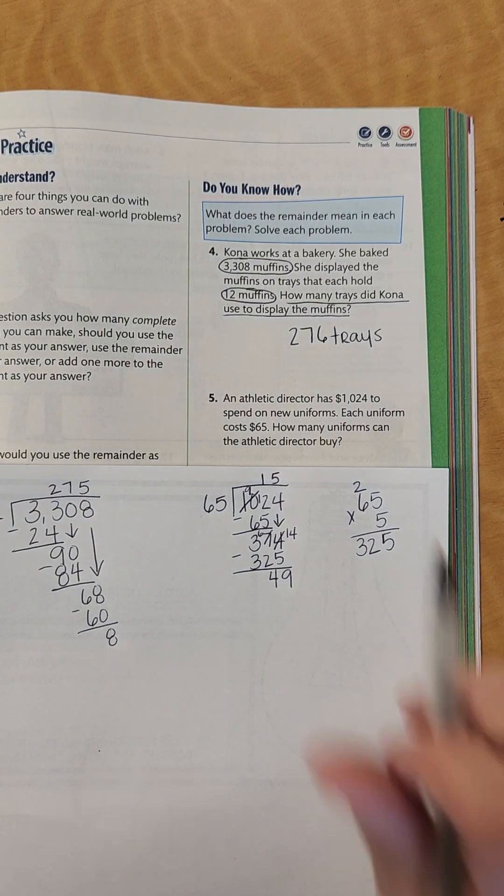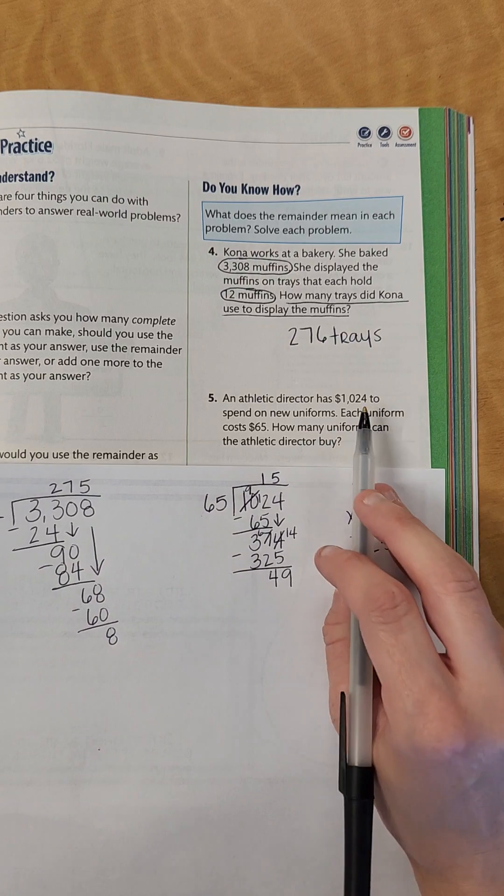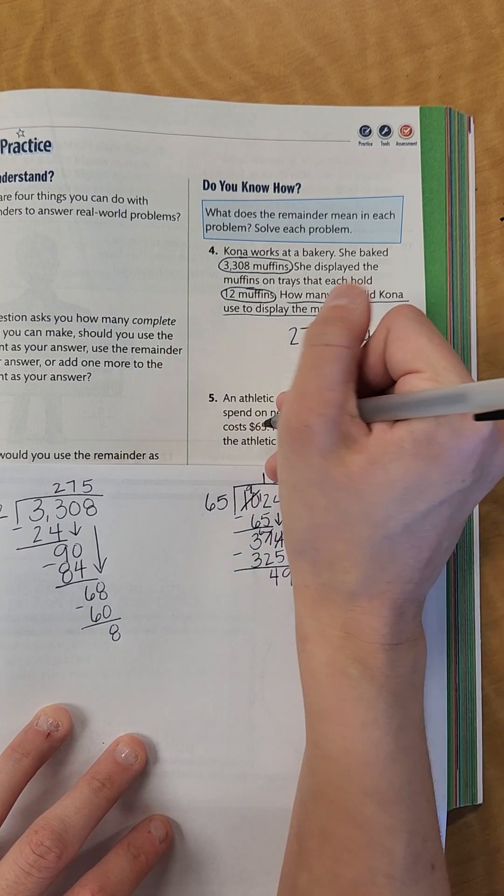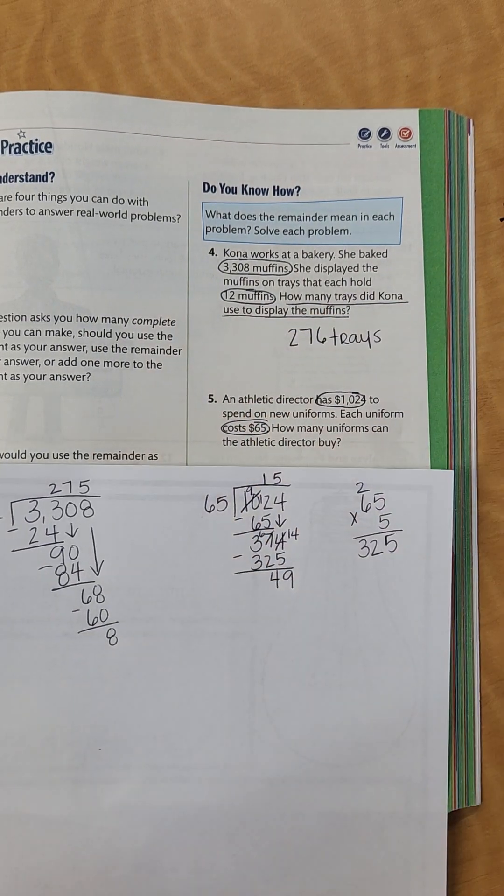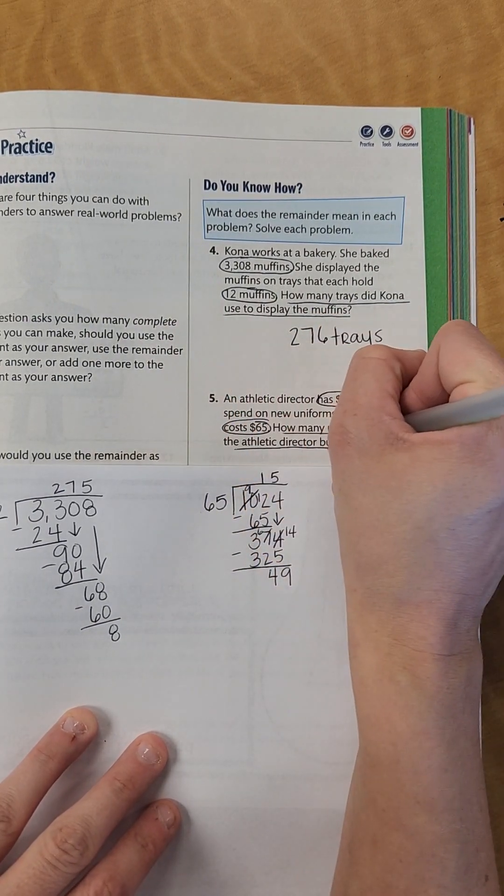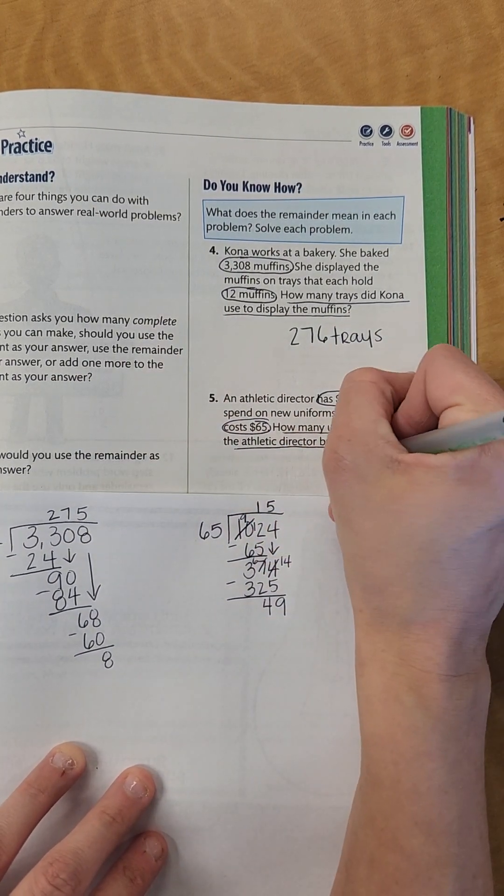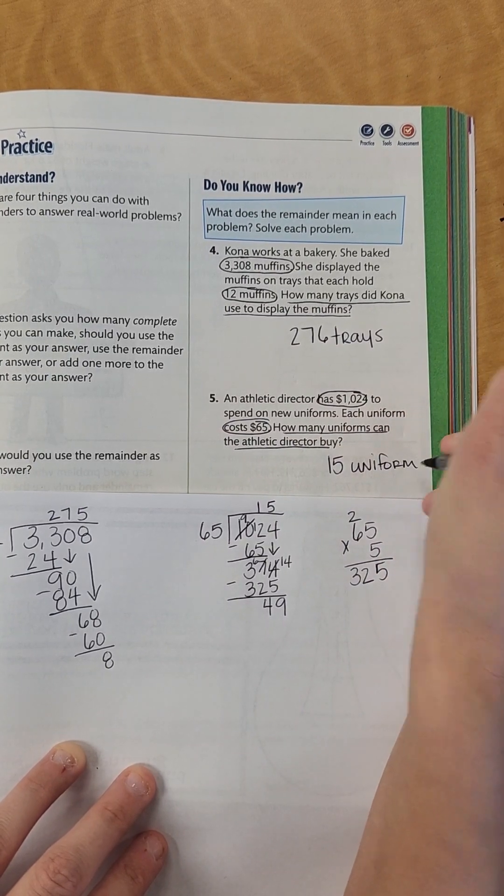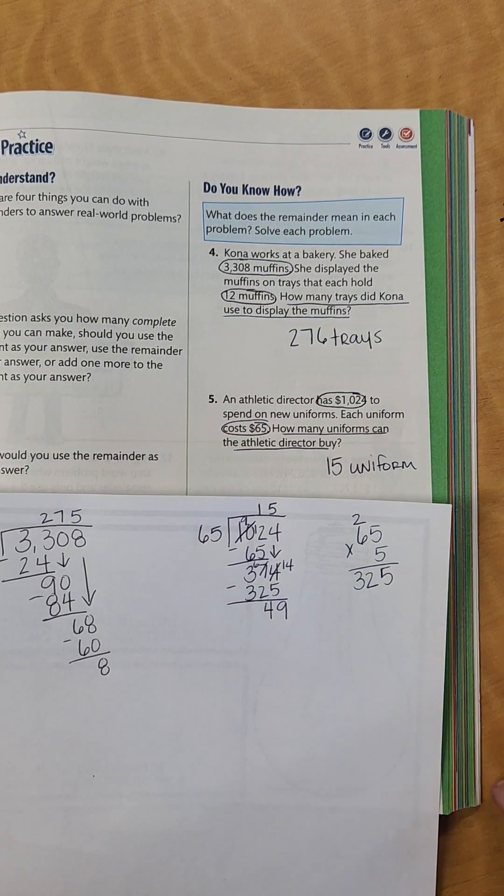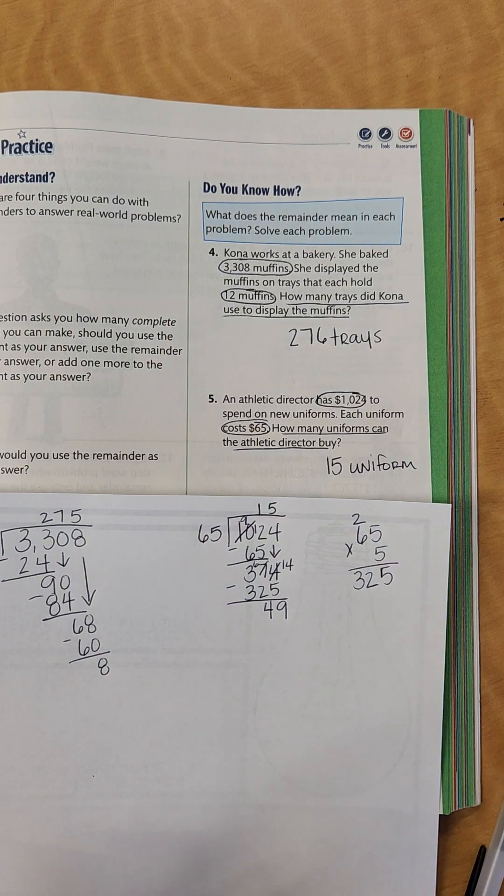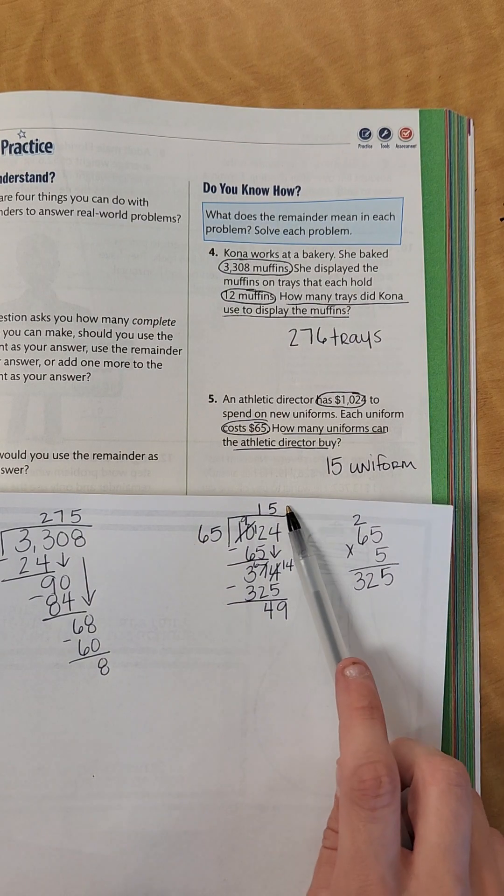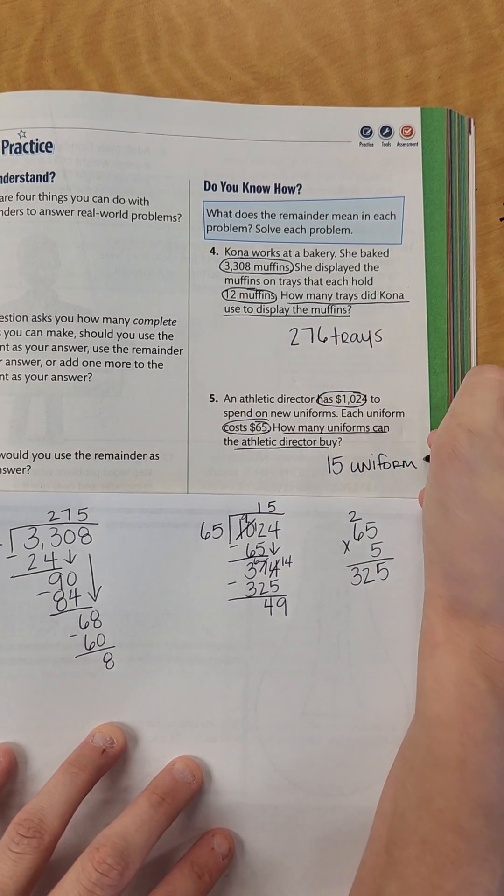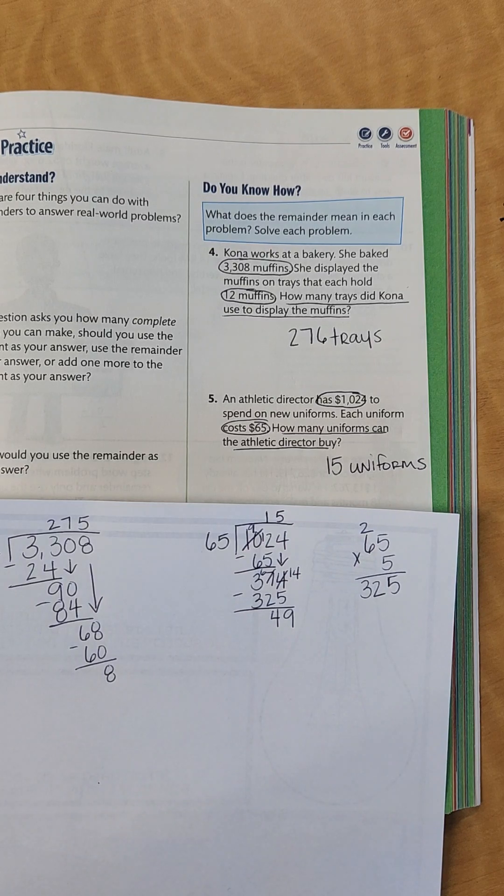So how many uniforms can the athletic director buy? That's the total amount he has. If each uniform costs $65, how much can he buy? With the amount that he has, he can only buy 15 uniforms. This one, you're not going to use that remainder. You're not going to have to get an additional uniform because you don't have enough money for that. So you're only figuring out how many you can buy with the amount of money that you have. So you can only buy 15 uniforms.